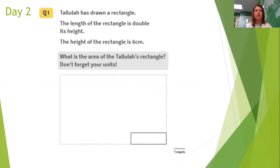Looking at question one, Tallulah has drawn a rectangle. The length of the rectangle is double its height. The height of the rectangle is six centimetres. What is the area of Tallulah's rectangle? And of course it's saying to us, don't forget your units.